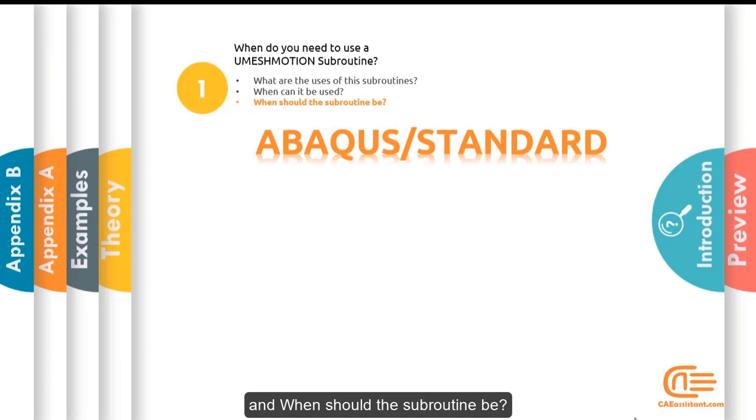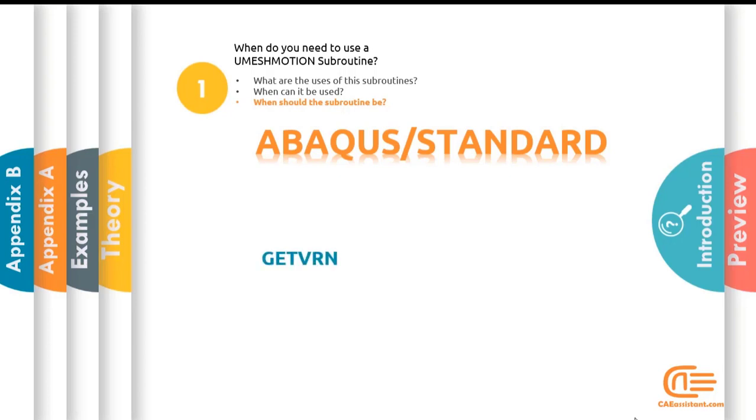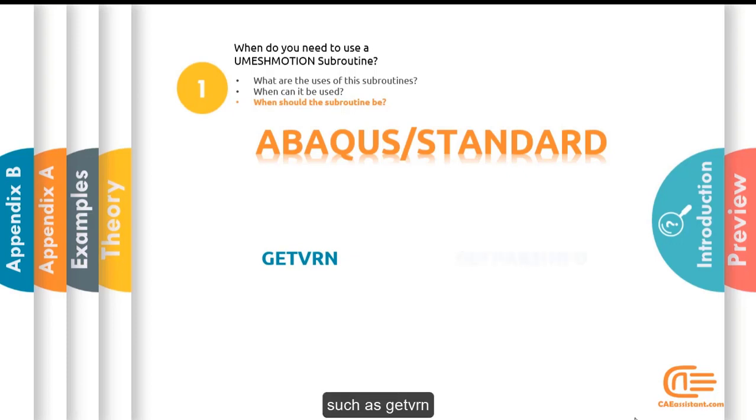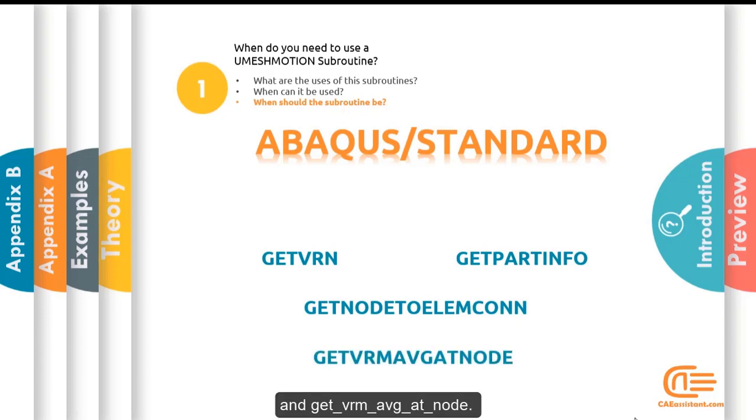And when should the subroutine be? This subroutine can be used with a standard solver. It should be noted that this subroutine is called at the end of any incrementation that has ALE. And in many cases, it is necessary to use other subroutines such as getvrm, getpartinfo, getnote2lmcon, and getvrmavgatnode.